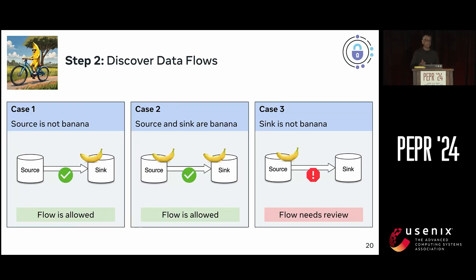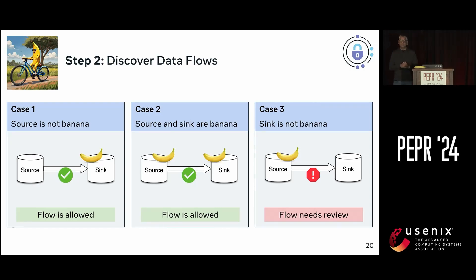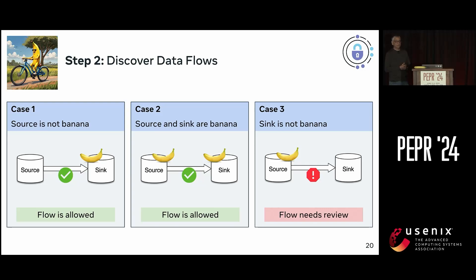Now that we have our initial banana assets identified, we look at data flows using lineage tools. We have three types of data flows to consider. First, a flow from a source not labeled banana going into a sink labeled banana — generally okay. Second, both source and sink are banana — also fine. Third, and most interesting: the source is labeled banana but the sink is not. In this case, you need to look deeper and figure out what's going on.